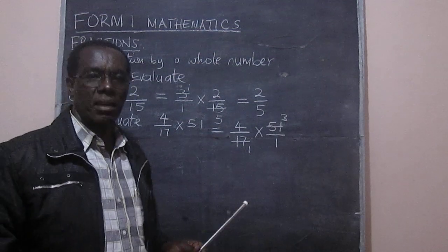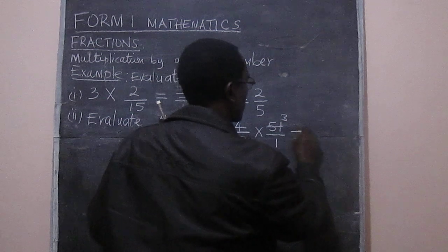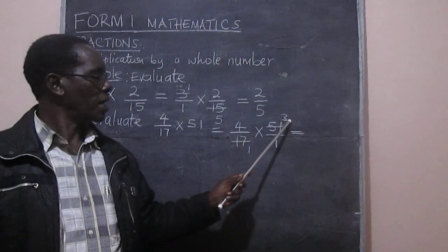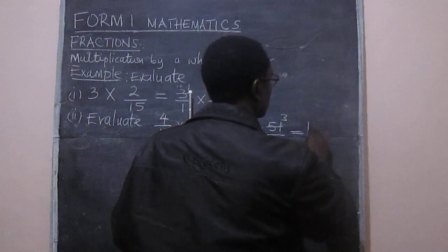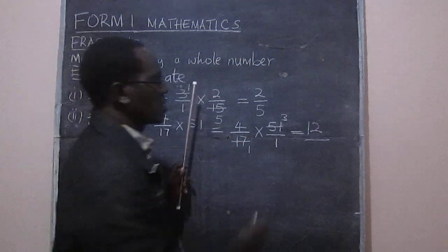And this gives us, or we can look at the numerator, 4 and 3 multiplied, so that gives us 12. And in the denominator we have 1 times 1, which is just 1.